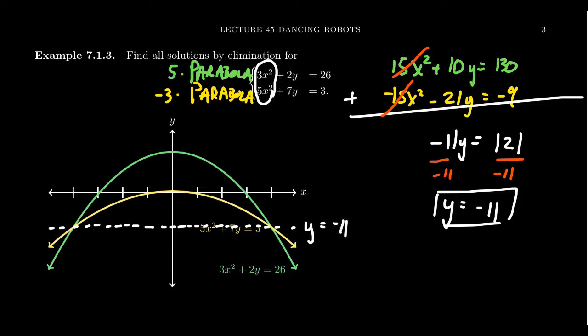Both of these functions are symmetric with respect to the y-axis, and so the two intersections are going to be reflective across the y-axis. So we only got one y-coordinate — that doesn't mean there's only one intersection; it just means the two intersections are going to have the same y-coordinate.